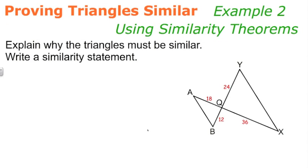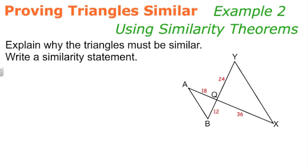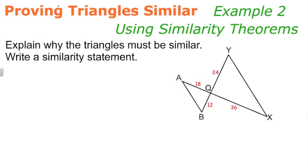Example two, we're using similarity theorems. Explain why the triangles must be similar, write a similarity statement. So given this diagram right here, we have to write a similarity statement. And to do that, remember we have angle-angle, we have side-angle-side similarity, and we have side-side-side similarity.